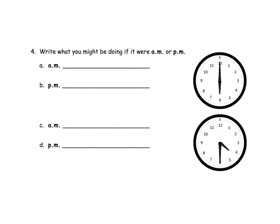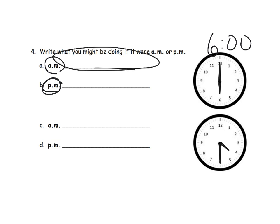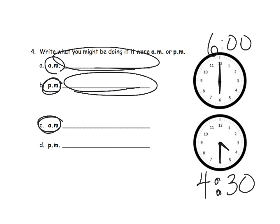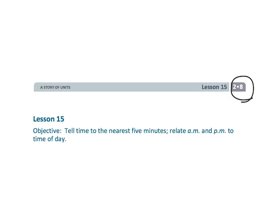Last slide for this video. It says: write what you might be doing if it were AM or PM. Students look at the clock showing six o'clock — what you're doing at 6 AM is going to be very different than at 6 PM. Let your students talk about that. Similarly, this clock says 4:30 — what might you be doing at 4:30 AM versus 4:30 PM? And that wraps up second grade module 8 lesson 15, telling time to the nearest five minutes with a focus on the meaning of AM and PM.